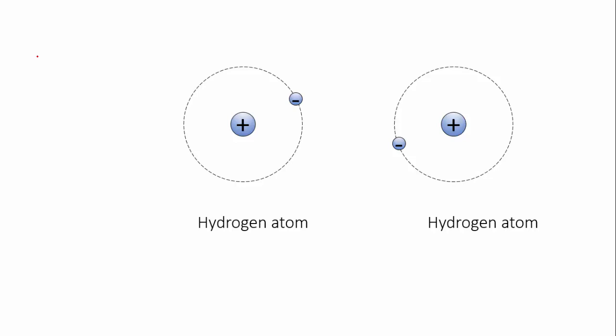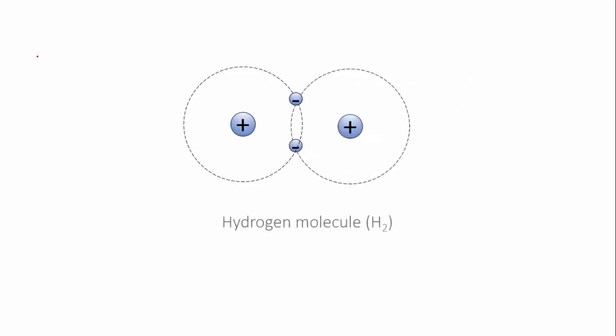If the atoms move close together, they can each share the other's electrons so that effectively they both have two. The electrostatic attraction is then between the two positive nuclei of the atoms and the shared electrons.